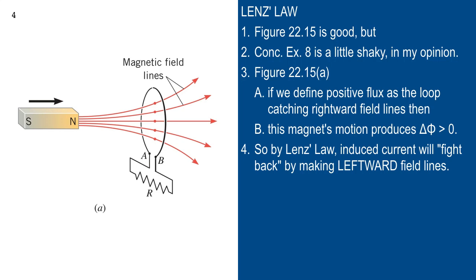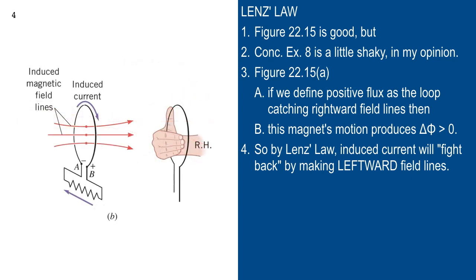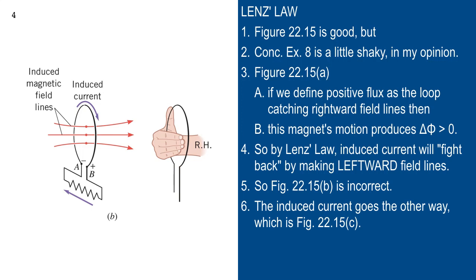What Lenz's law says is that the induced current is going to try to counteract that. If you're catching more rightward field lines over time, Lenz's law says the current in the loop will produce leftward field lines — and that's where the right-hand rule comes in. They don't have the current shown in figure A, but they do in figure B. However, there's something really shaky about figure B. That current direction shown would give rightward field lines, not leftward — that is wrong. The induced current actually goes the other way, as shown in figure 22.15C.